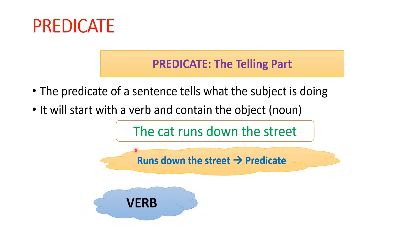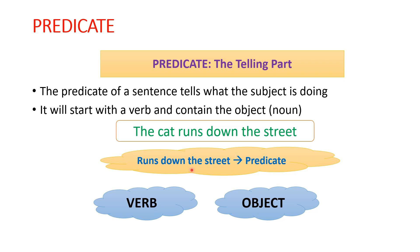Here, runs is the verb and down the street is the object. So, verb plus object is called the predicate. This tells us what the subject is doing.